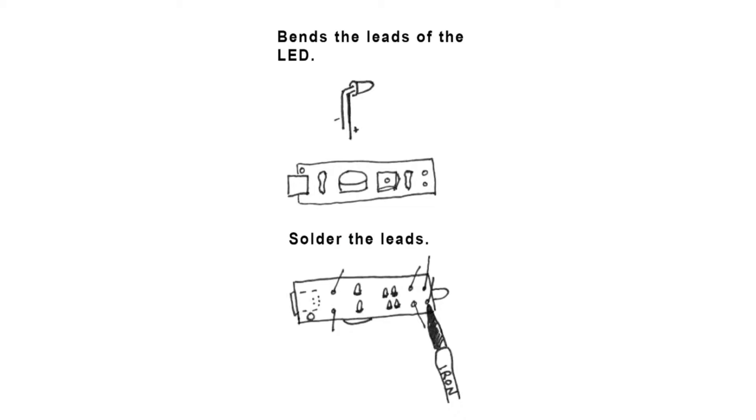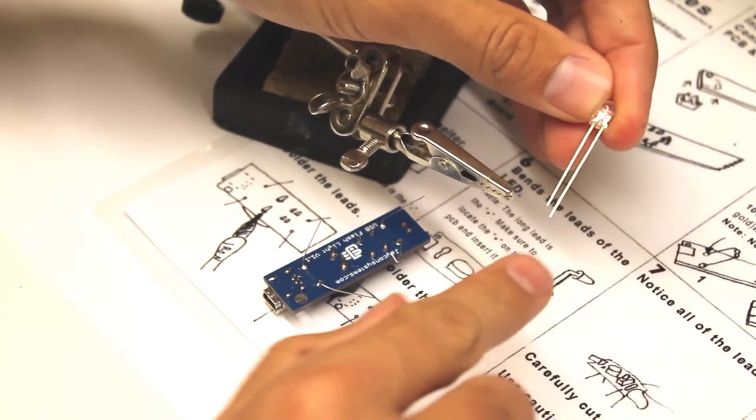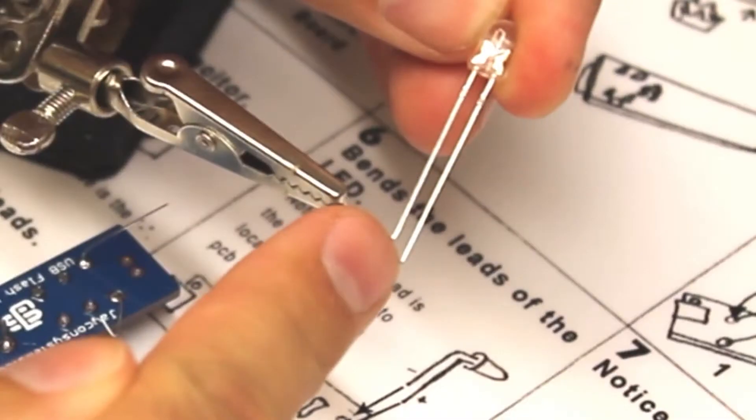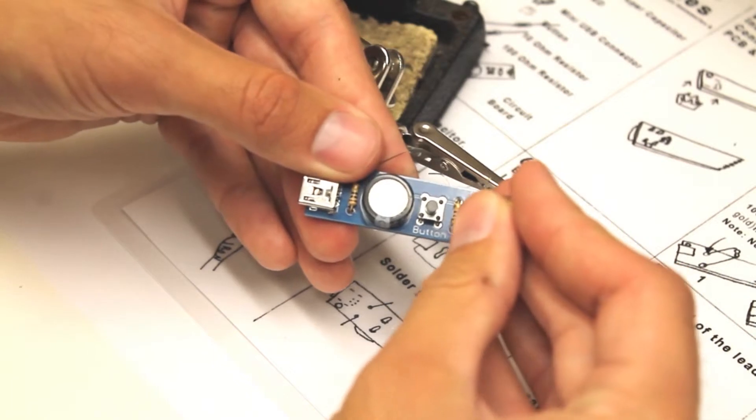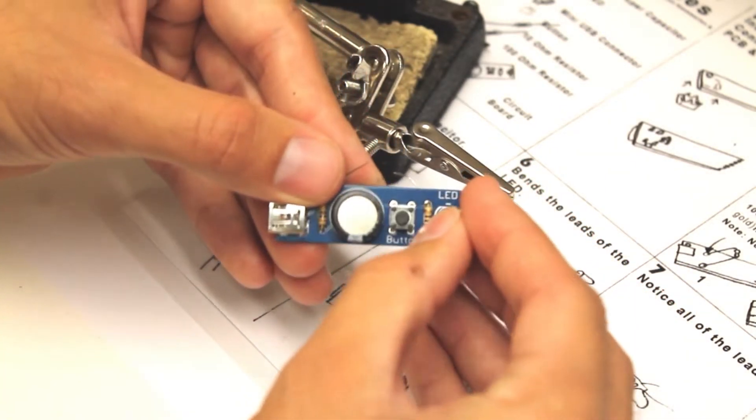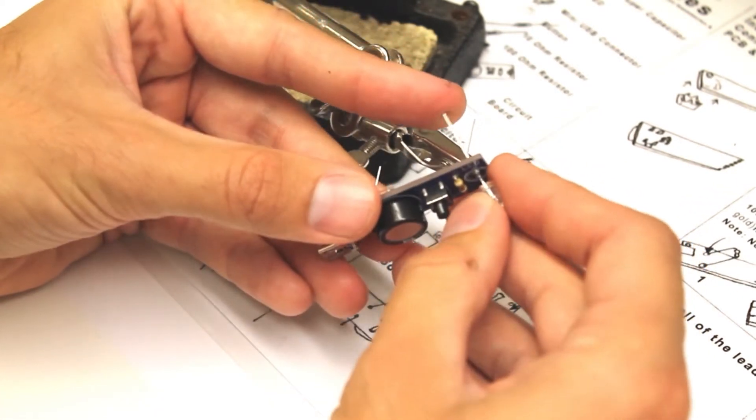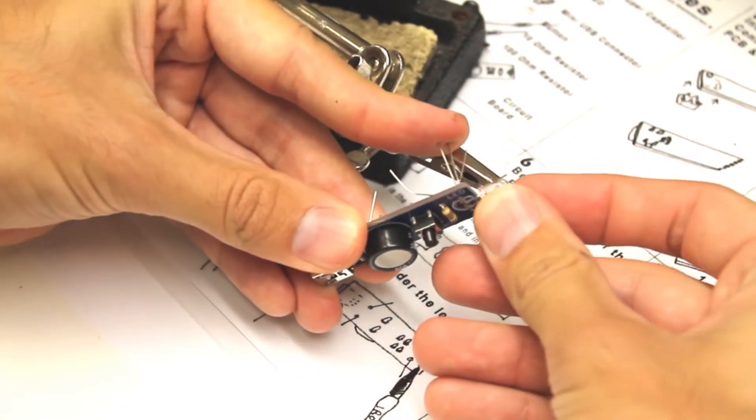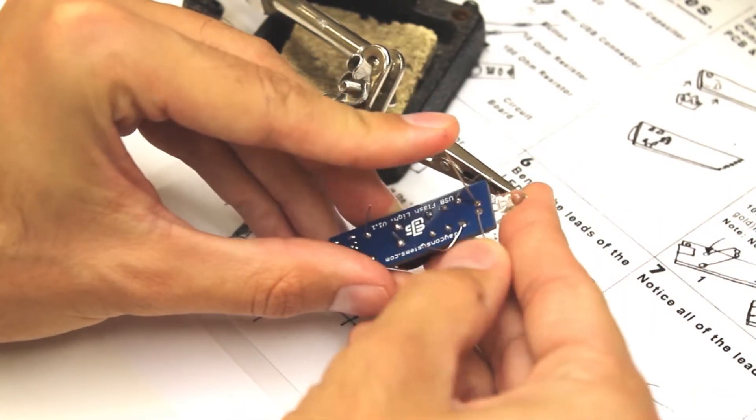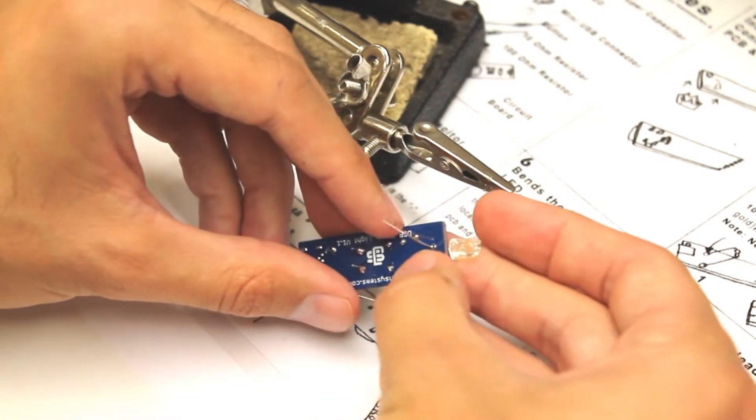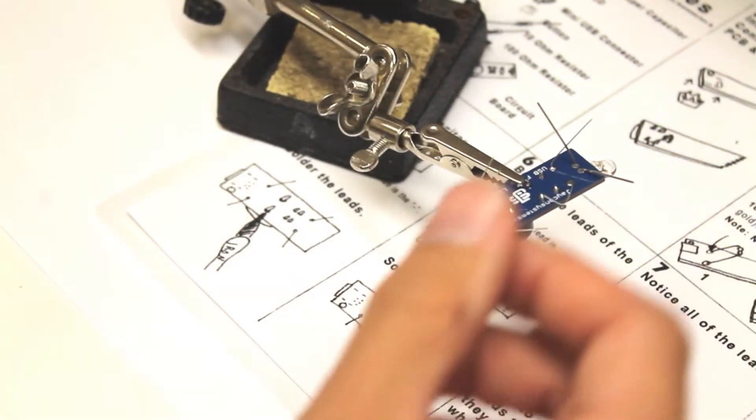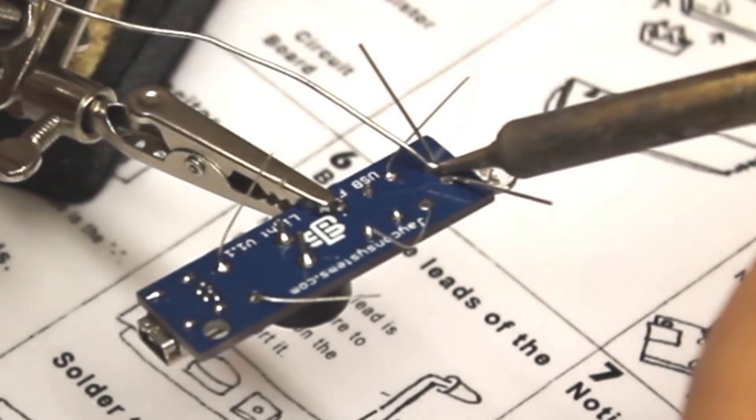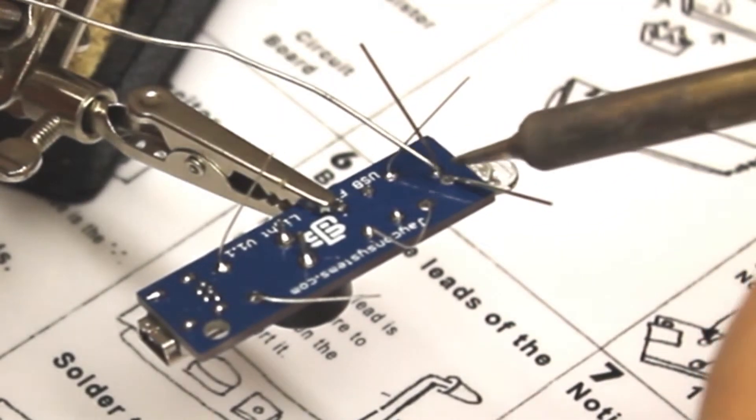Next we're going to locate the LED. It is directional. Make sure you put the plus side with the plus and the negative side with the negative. The long pin is the positive, the short pin is the negative. The circuit board is marked. Insert the pins and bend the LED. Make sure to bend the pins so the LED does not slide out. Apply solder to the leads.